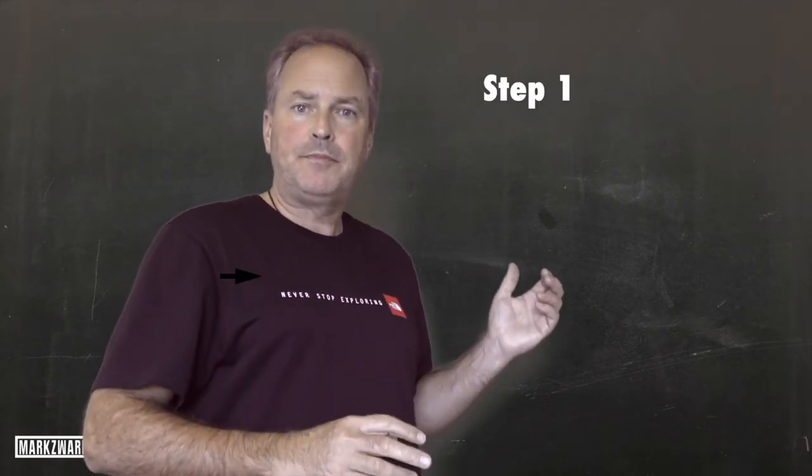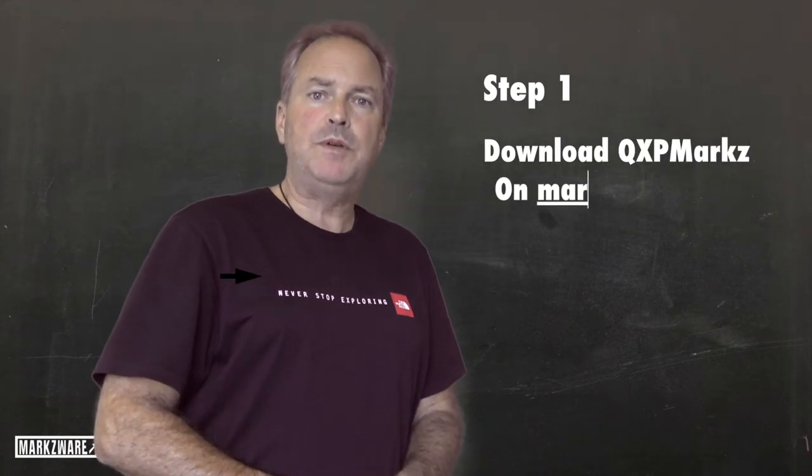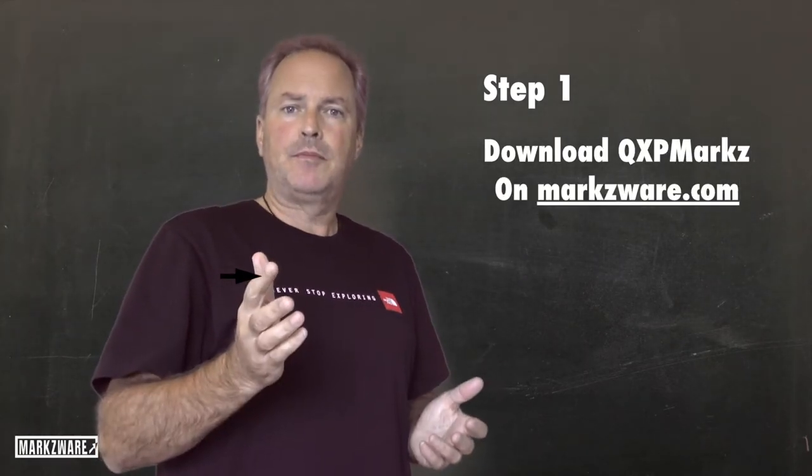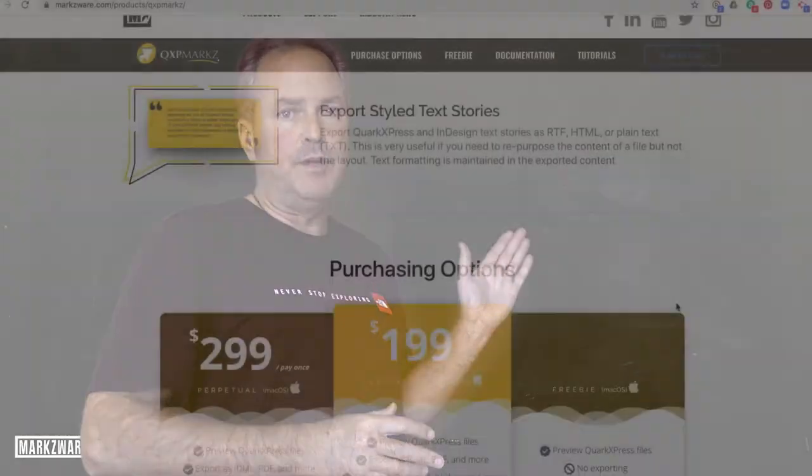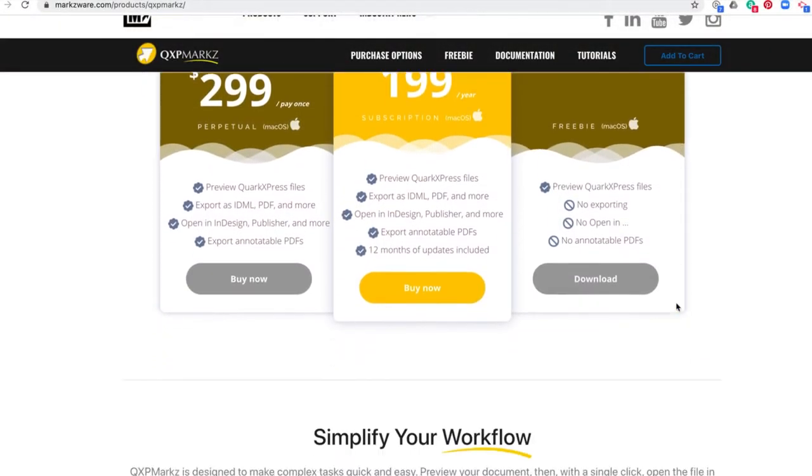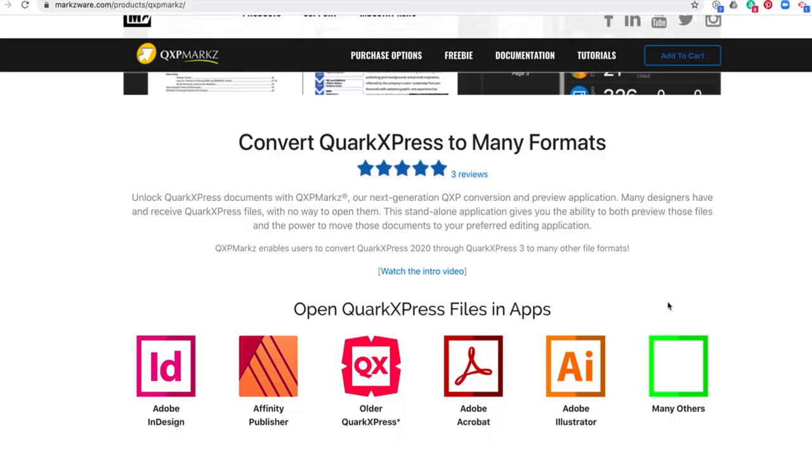Step 1. Download Markzware's QXP Markz and install it. QXP Markz does cost a little bit of money, but it's an amazing tool that does much more than only convert Quark to Affinity Publisher.